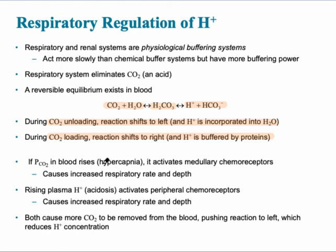In the case of hypercapnia — when carbon dioxide rises — this activates the medullary chemoreceptors, which increases the respiratory rate and depth, triggering hyperventilation. When carbon dioxide increases, hydrogen also increases. In the case of acidosis, it activates the peripheral chemoreceptors as well, which also causes increased respiratory rate and depth.